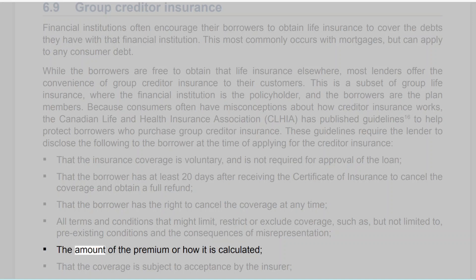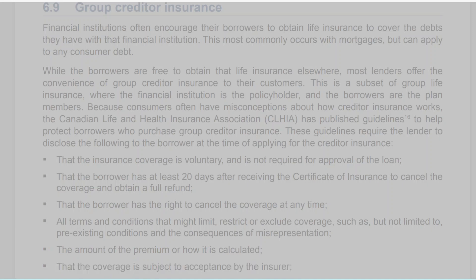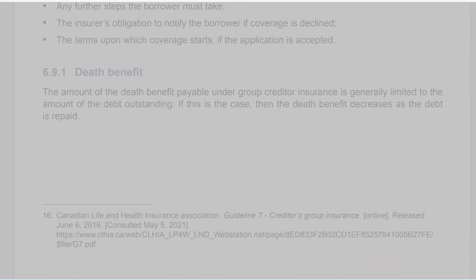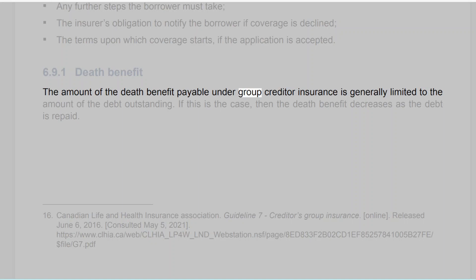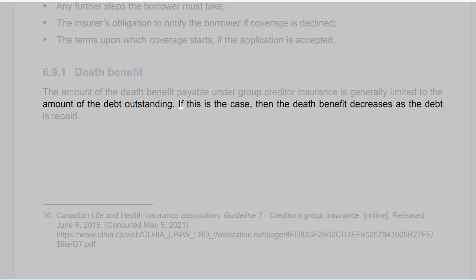Additional required disclosures include: that the coverage is subject to acceptance by the insurer; any further steps the borrower must take; the insurer's obligation to notify the borrower if coverage is declined; and the terms upon which coverage starts if the application is accepted. 6.9.1 Death Benefit. The amount of the death benefit payable under group creditor insurance is generally limited to the amount of the debt outstanding. If this is the case, then the death benefit decreases as the debt is repaid.